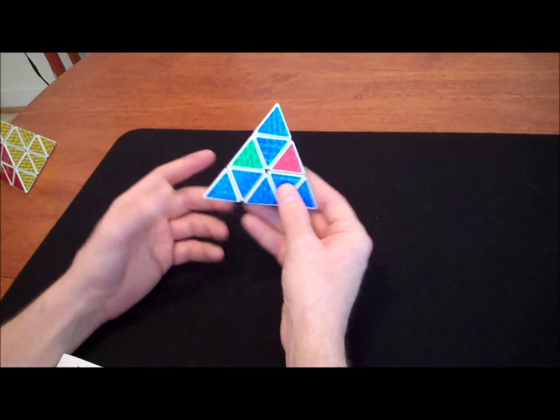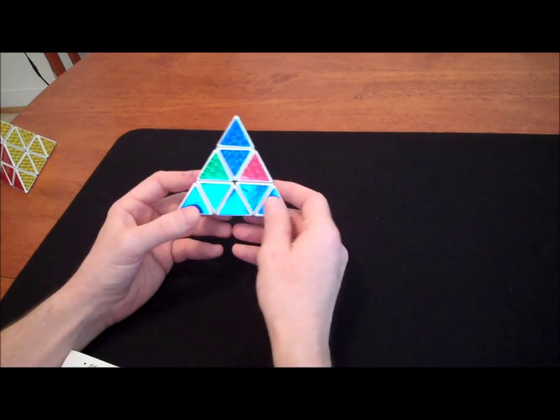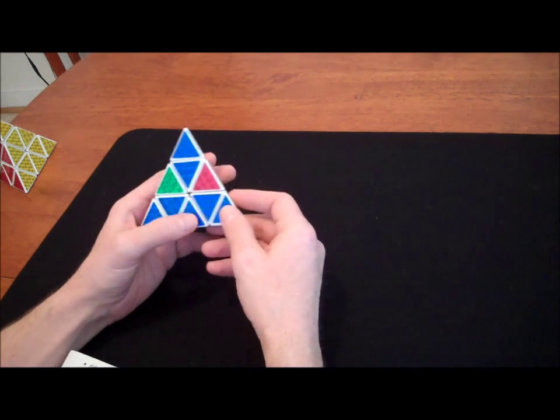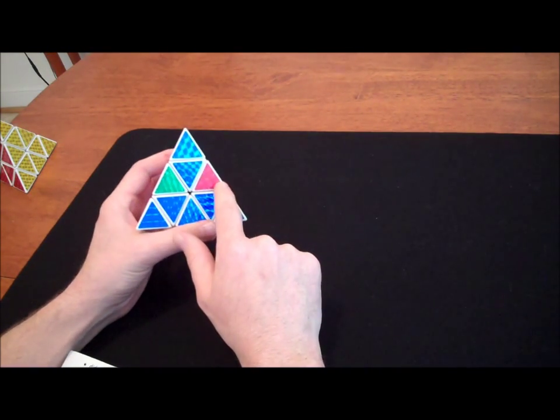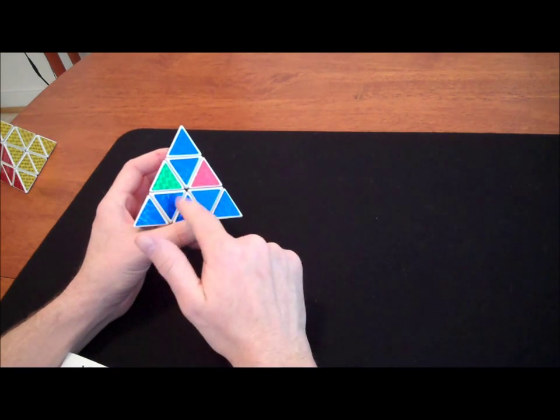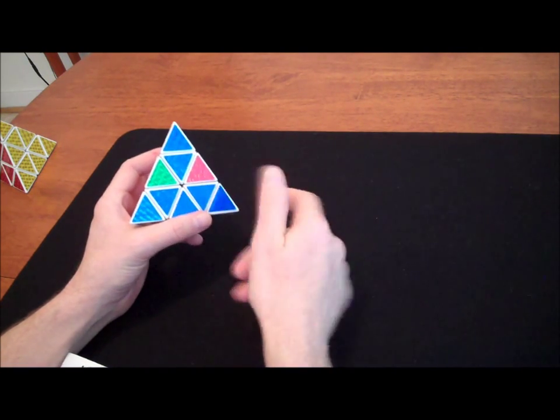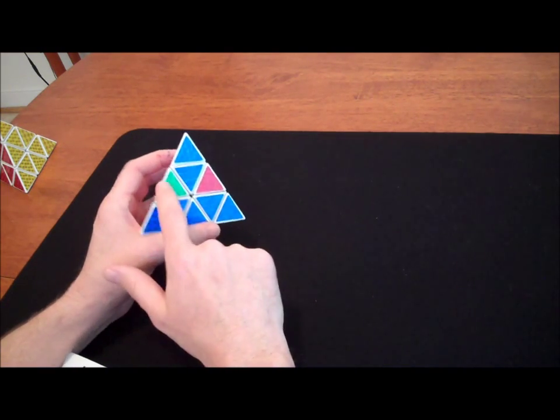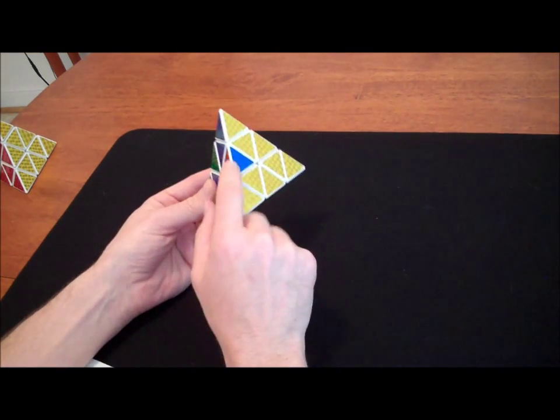In other words, one more sequence of moves will solve the rest of the pyramid. How are we going to do it? Well, once again, we're going to look to move a piece from the right side over to the left side, using those same three moves. Down, down, up. Or moving it the other way, from the left side over to the right side.